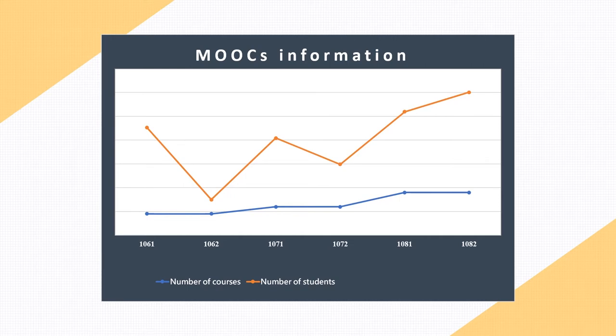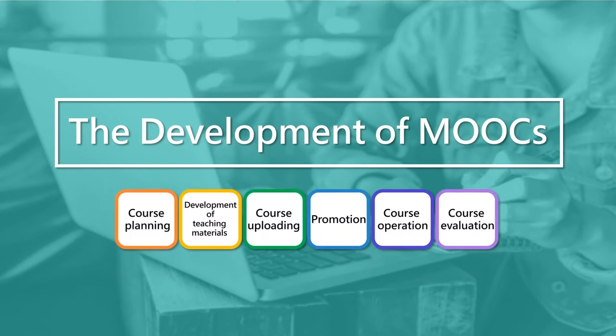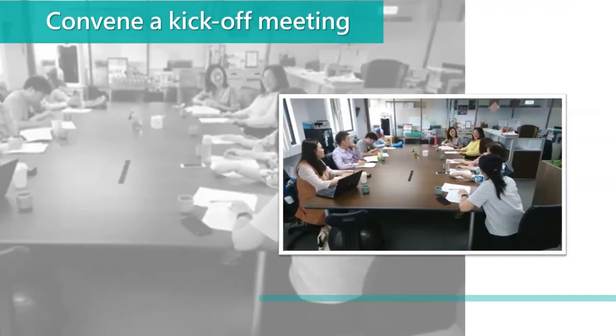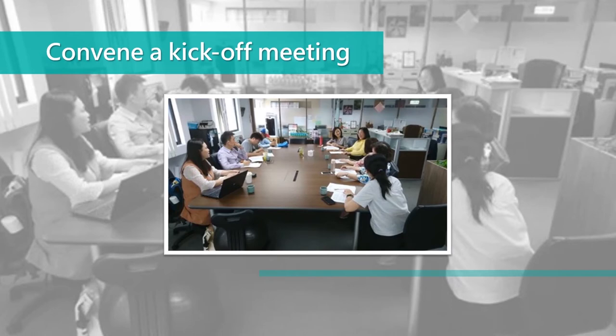The number of students taking the class has been accumulated to over 20,000. Every MOOC course is developed according to professional and systematic processes, which can be divided into six stages. First, we convene a kick-off meeting before course development to determine the course demand and the development orientation of audio-video teaching materials, jointly by the initiator of the course, the teacher, and the e-learning development team.